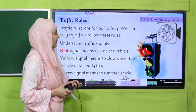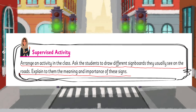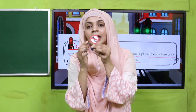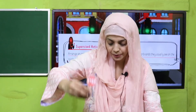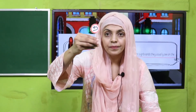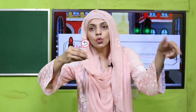Arrange an activity in class: ask students to draw different sign boards they usually see on the road and explain their meaning and importance. Some signs to remember: no horn — make a horn sign and cross it. Stop sign. U-turn — make an arrow going this way, which means you can take a U-turn from here.